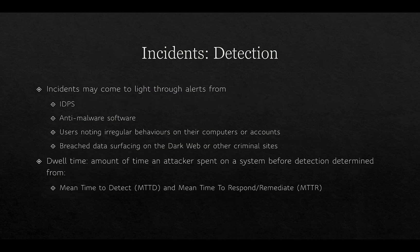In the first phase, incidents need to be detected and can come to light through a variety of means. Alerts can be raised through an intrusion detection or protection system, anti-malware software, users noting irregular behavior on their computers, accounts, or mobile phones, and breach data surfacing on the dark web or criminal sites. Security researchers may also alert an organization that data has appeared or is vulnerable, in which case it would be counted as a breach, even if it's not clear whether anyone other than the researchers had access.